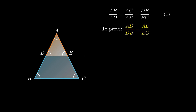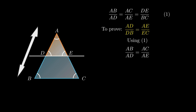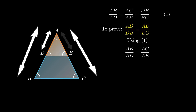We need to prove that the ratio of side AD and BD equals the ratio of side AE and EC. From equation number one we get ratio of AB and AD equals ratio of AC and AE. From the figure, side BD can be written as AB minus AD, while side EC can be written as AC minus AE.